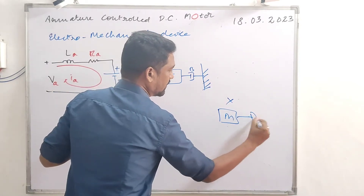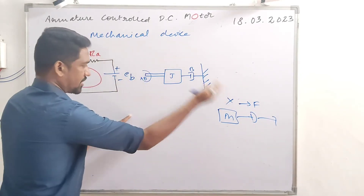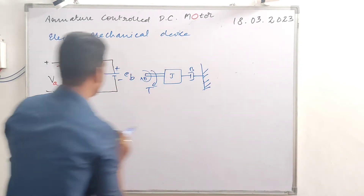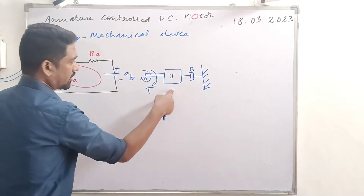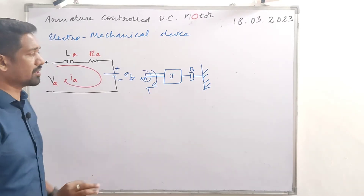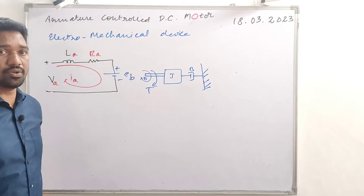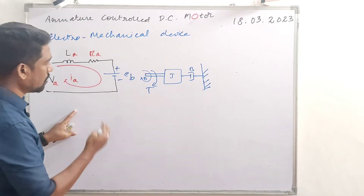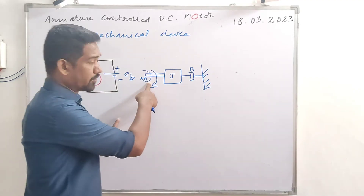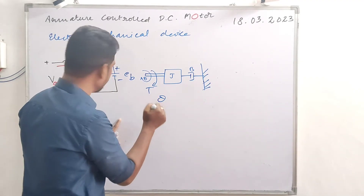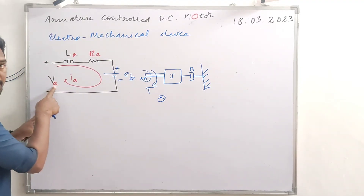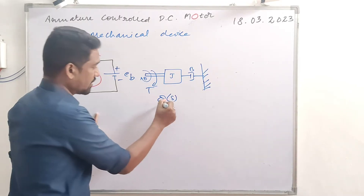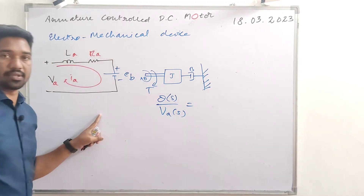Mass, B, and force applied in translatory — at the same place, we go for torque in rotational systems. The transfer function is the ratio between the Laplace of output to the Laplace of input. The output is the final shaft rotation theta, and the input excitation is Va. So transfer function is theta(s) / Va(s).